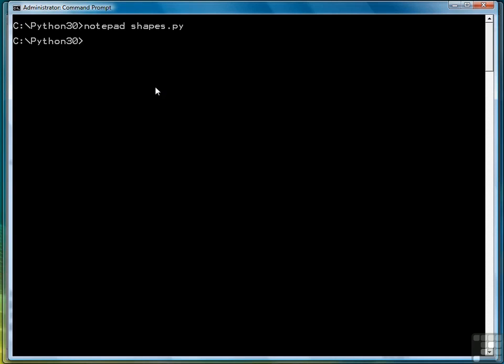Bring our command prompt back up. Type python shapes.py, and you'll see that indeed we did move from x5y10 to x15y22.